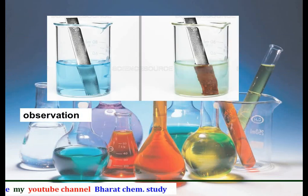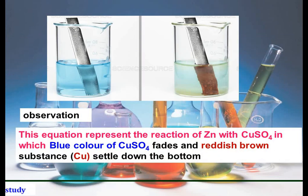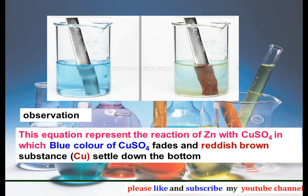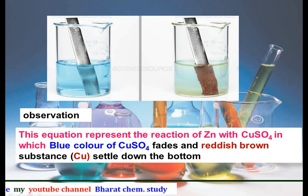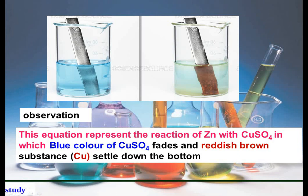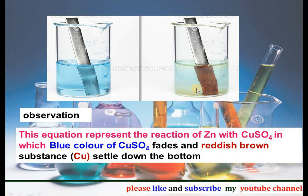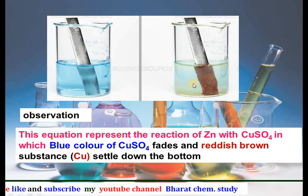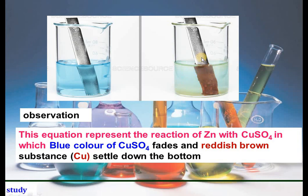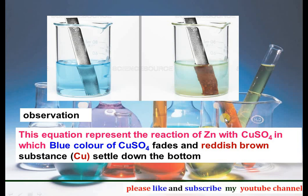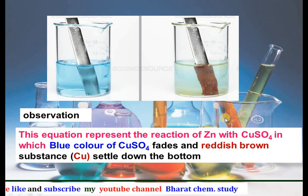Here is the picture showing the observation when zinc is added to copper sulfate solution. First, the copper sulfate solution was blue, but when zinc is added, the reaction proceeds and slowly the bluish color of the copper sulfate fades and a reddish-brown substance starts forming over the zinc rod. That is a very important observation to note down.